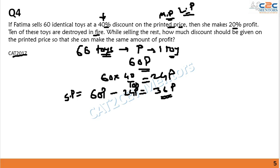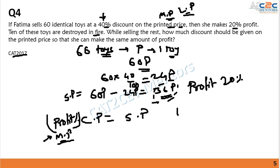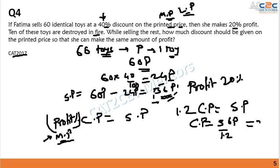The 40% discount on 60p gives a discount of 24p, so selling price = 60p − 24p = 36p. Since she makes 20% profit, cost price × 1.2 = 36p, so cost price = 36p ÷ 1.2 = 30p.